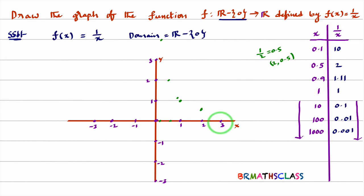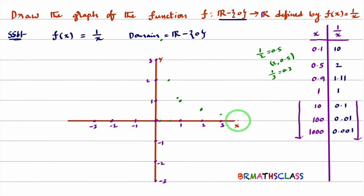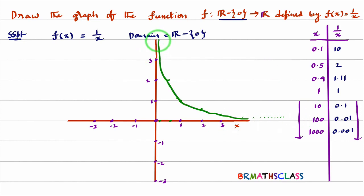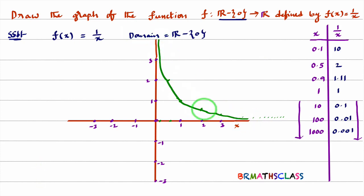When x = 3, 1/3 ≈ 0.3. When x = 10, this value is close to 0. When x = 100, it is very very close to 0. The graph will continue further. Joining all these points, the graph looks like this — it never touches the x-axis.